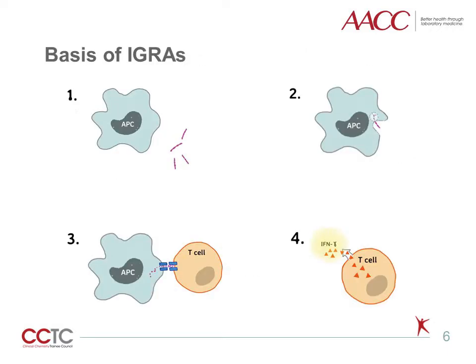IGRA development became possible after one of the key pathways in the body's immune response to TB infection was elucidated. Briefly, during infection with TB, antigen-presenting cells, or APCs, encounter mycobacterial organisms. The APCs then engulf and process the mycobacteria. Next, they present these processed bits of mycobacteria in the form of antigens to CD4-positive and CD8-positive T cells. Finally, the activated T cells release the cytokine interferon gamma. IGRAs are designed to elicit and then detect this interferon gamma, an indirect marker of TB exposure.